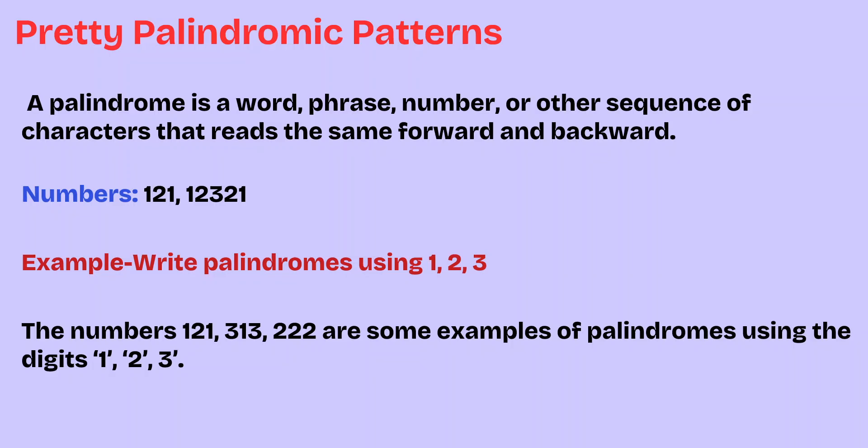Pretty Palindromic Patterns. A palindrome is a word, phrase, number, or other sequence of characters that reads the same forward and backward. With numbers, examples of palindromic numbers are 121, and 1,2,3,2,1. So 1,2,0,3,2,1 — these are examples of palindromic numbers.